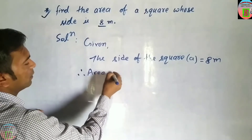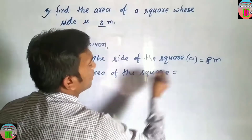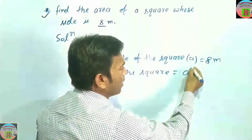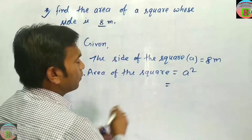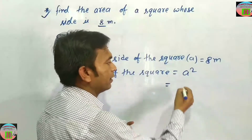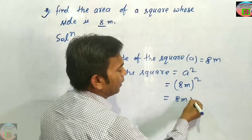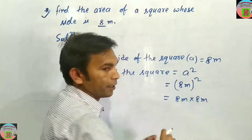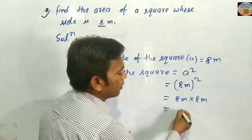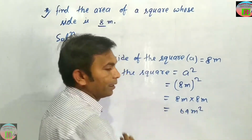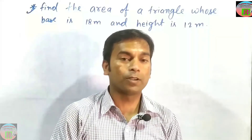Therefore, area of the square. What is the formula? Area of the square is equal to a square. Putting the value of a, that is 8 meter: 8 meter to the power 2, that is 8 meter into 8 meter — we write it 2 times because power is 2. Therefore, 8 into 8 that is 64 meter square. This is your right answer.